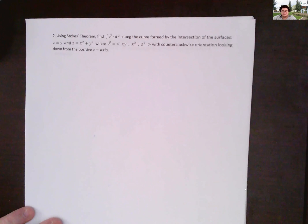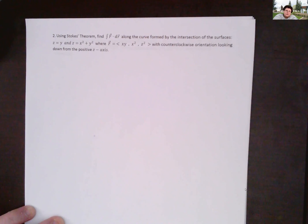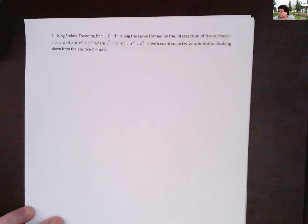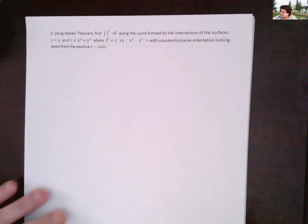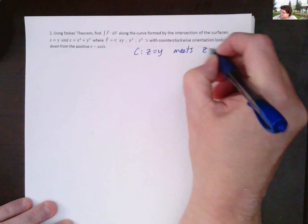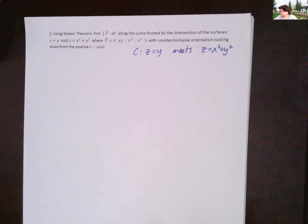For question two, we're going to use Stokes' Theorem to find the line integral F dot dr along the curve formed by the intersection of the surfaces z = y and z = x² + y². F is the vector field (xy, x², z²). We're told to use counterclockwise orientation looking down from the positive z-axis. Once we sketch our picture we'll see which way the curve is going.